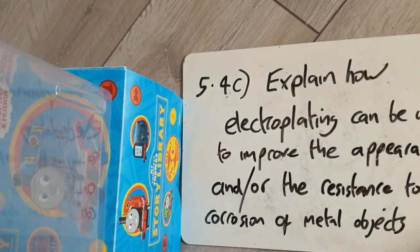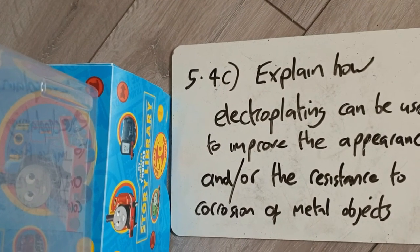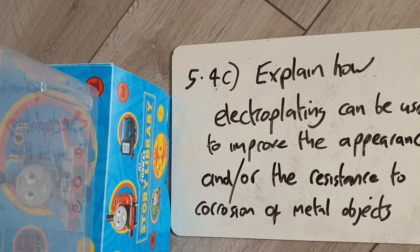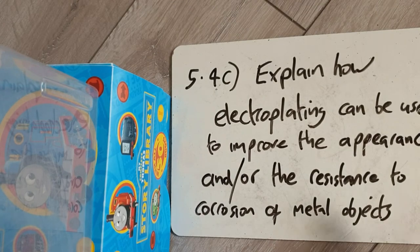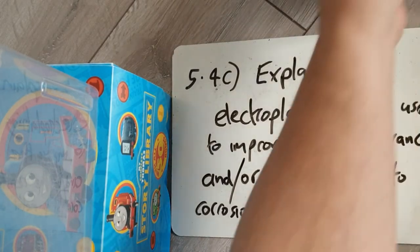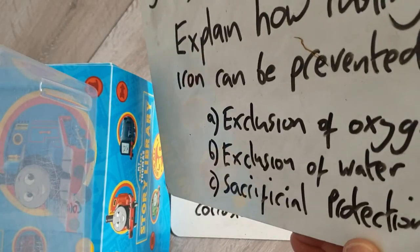The final topic is electroplating. Explain how electroplating can be used to improve the appearance and/or the resistance to corrosion of metal objects. Electroplating uses electrolysis — that's for another lesson — to coat a metal with another metal. You take something made of steel and electroplate it with another metal of your choice, either for appearance or to improve resistance to corrosion by keeping out oxygen and water.